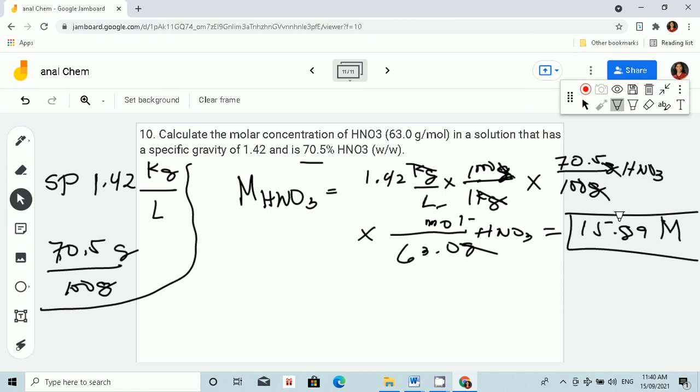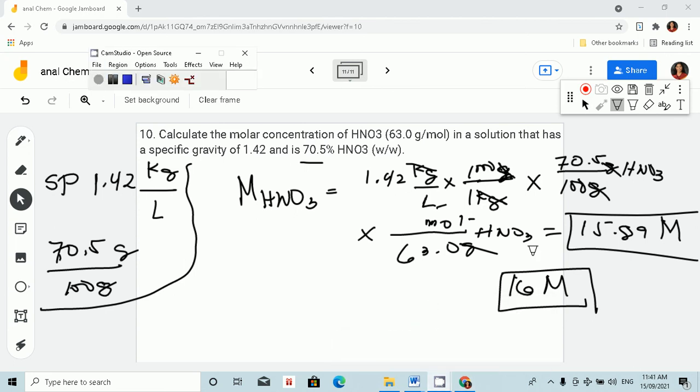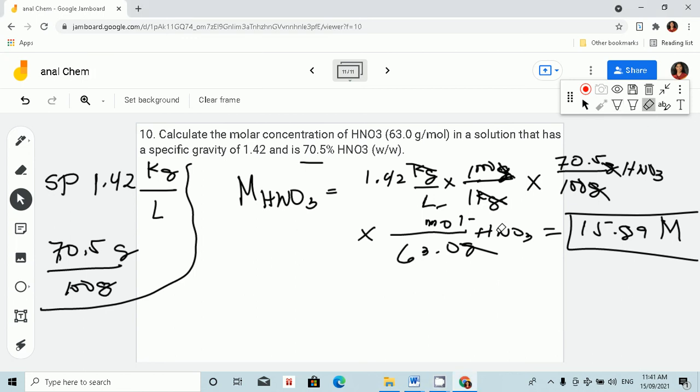So that is the concentration of our nitric acid, which is 15.89 molar. Or, applying significant figures, we have 16 molar. Oh, so we have three significant figures. We have 15.9 molar. So 15.9 molar.